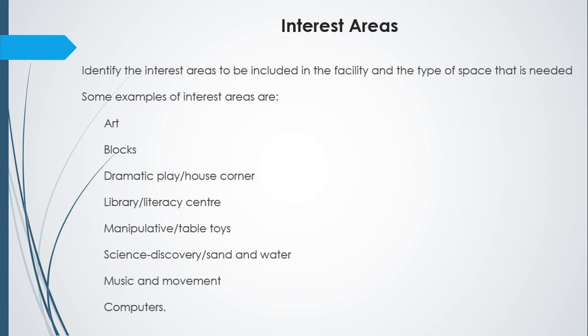Interest areas: identify the interest areas to be included in the facility and the type of space needed. Examples include: art, blocks, dramatic play or house corner, a library or literacy center, table toys for manipulation, science discovery, sand and water, music and movement, and computers.